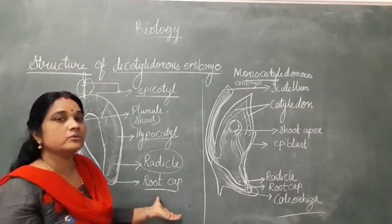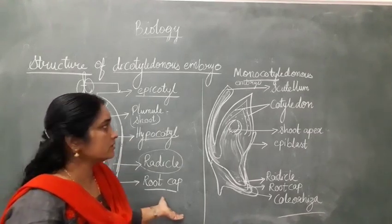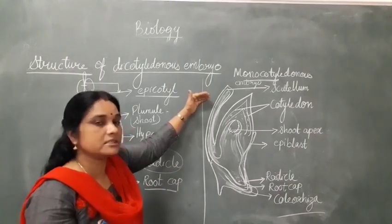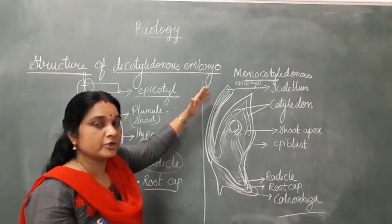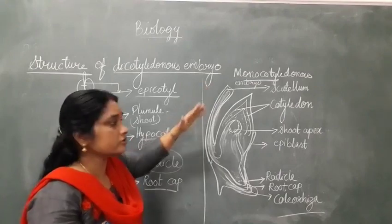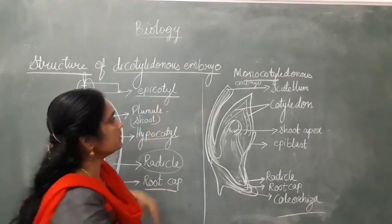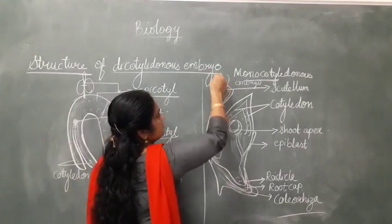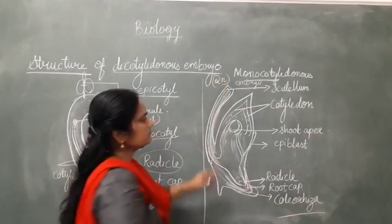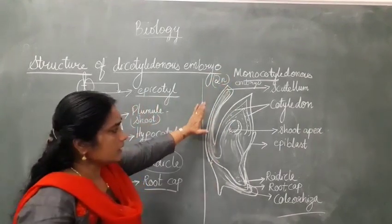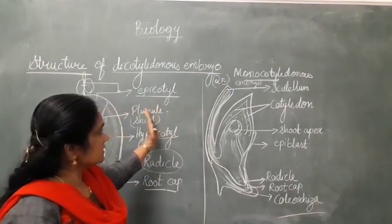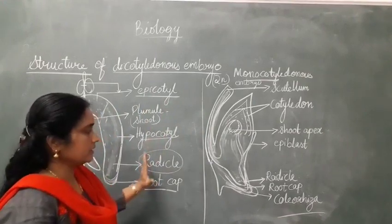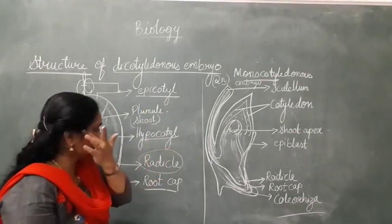Now let's study the structure of the monocotyledonous embryo. Both the dicot and monocot embryos are diploid in nature — two sets of chromosomes. It is quite different from the dicot, so you can analyze them comparatively.